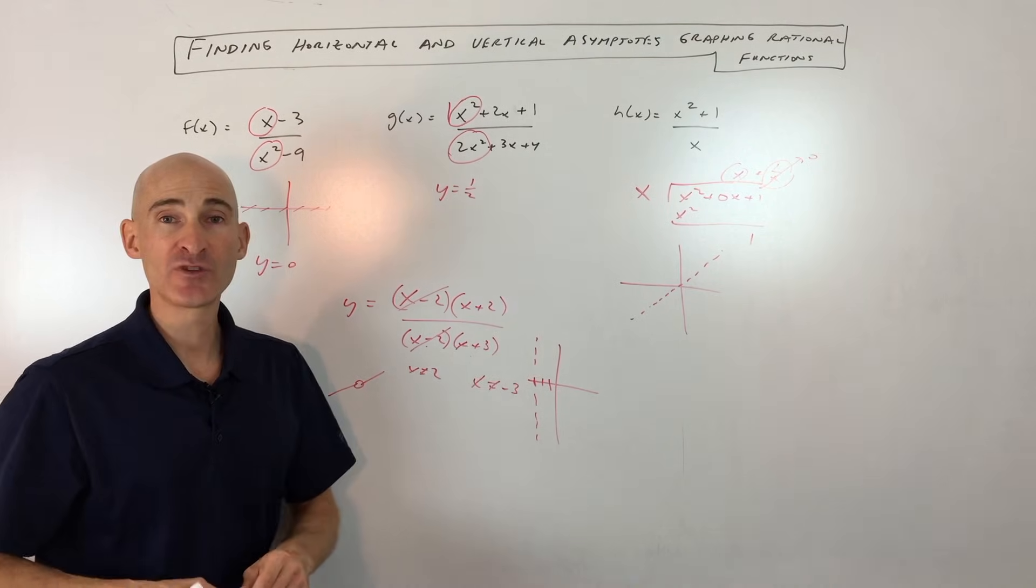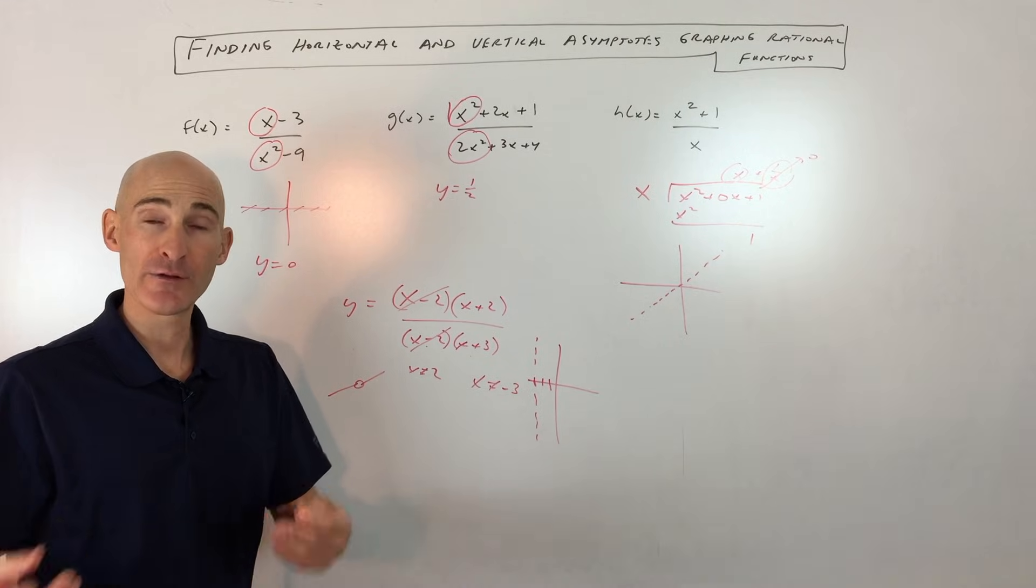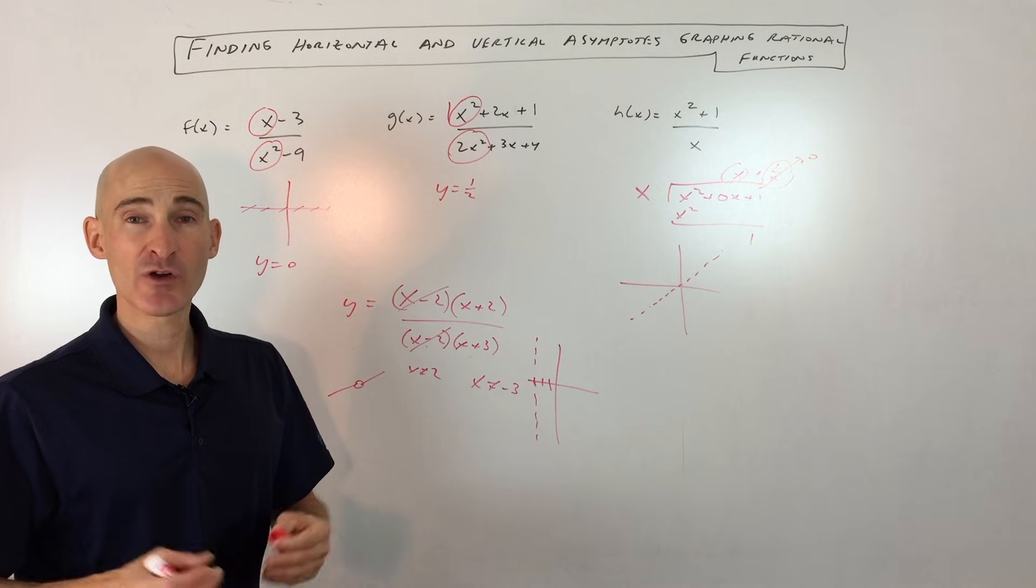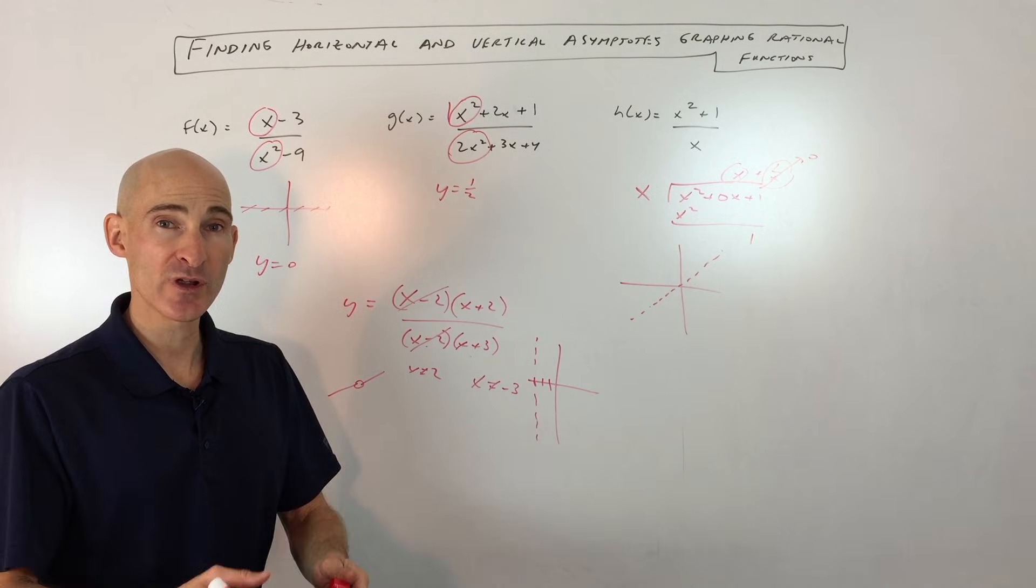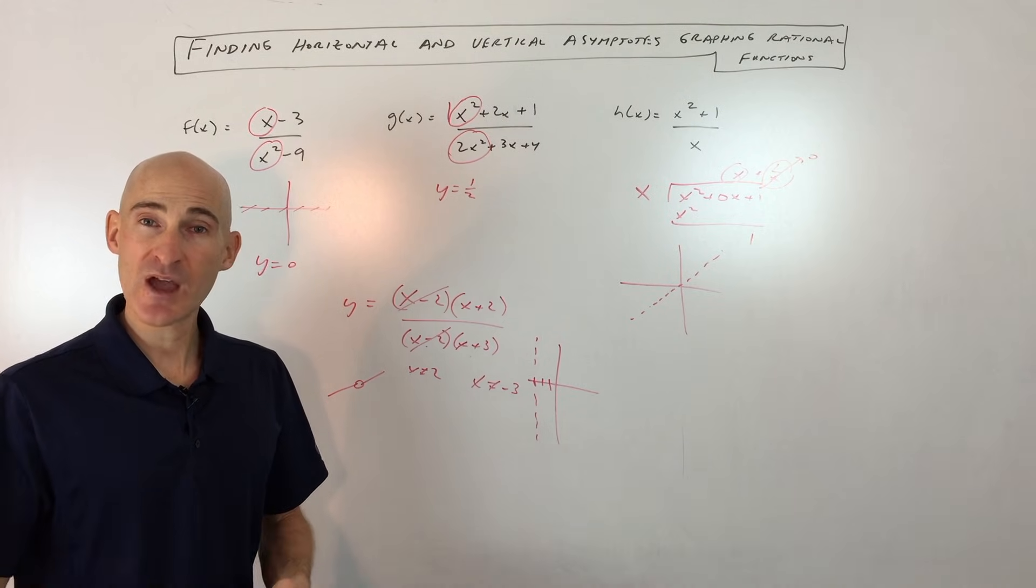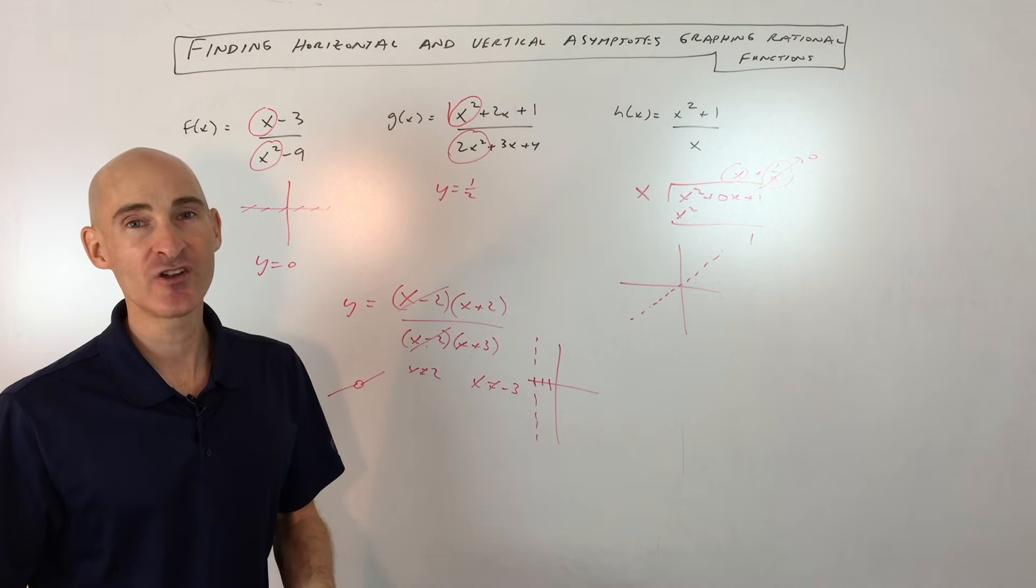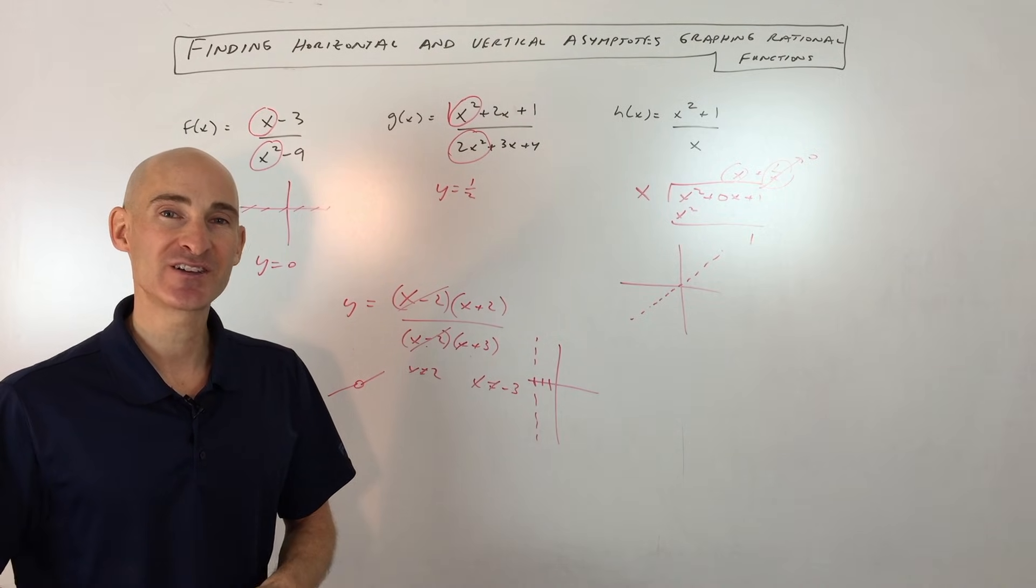So I hope this video helped you understand how to find horizontal and vertical asymptotes when you're graphing rational functions. Check out some of the other videos I did on graphing rational functions to go a little deeper and understand this even better. Subscribe to the channel. Check out more math videos on Mario's Math Tutoring YouTube channel. I look forward to seeing you in future videos. I'll talk to you soon.